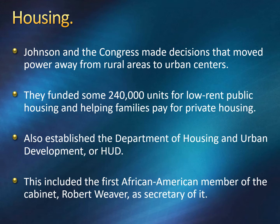Housing. Johnson and Congress made decisions that moved power away from rural areas, such as farming and agriculture, to urban centers such as cities. They funded some 240,000 units for low-rent public housing and helped families pay for private housing. We talked about the decline in cities in the 1950s, and Johnson is going to try to improve that.